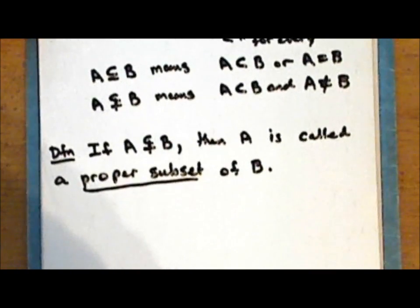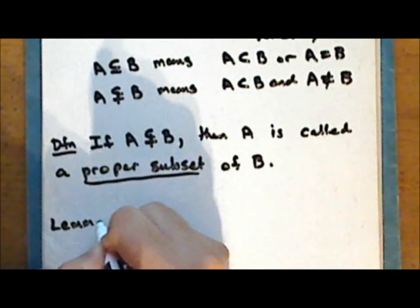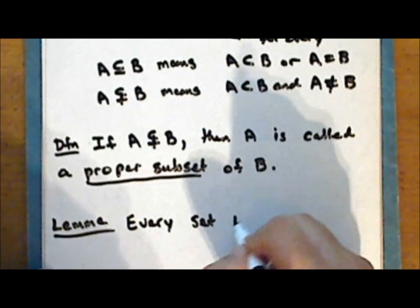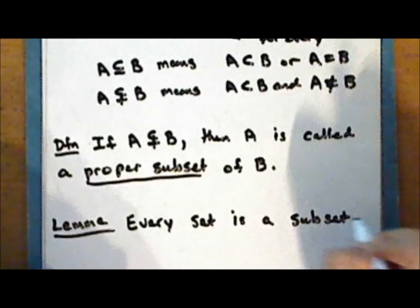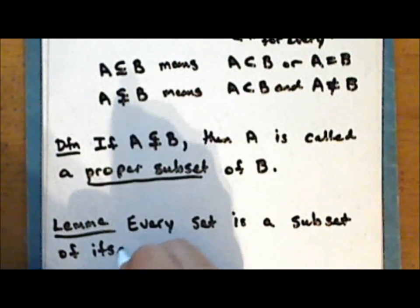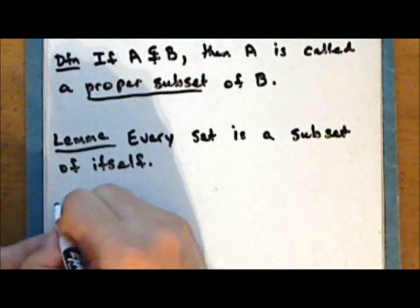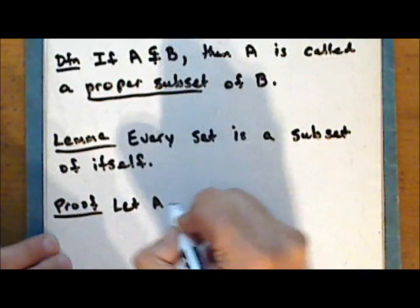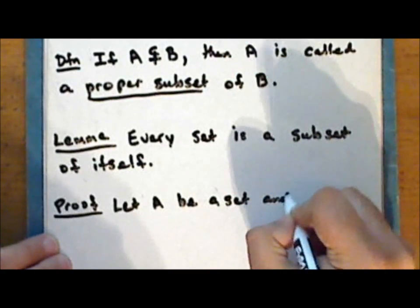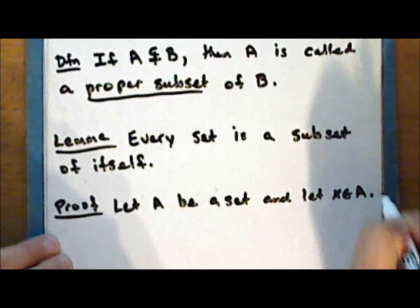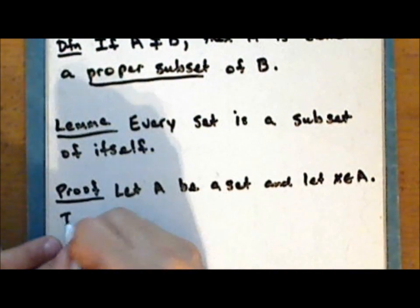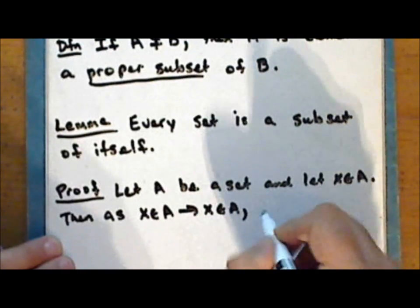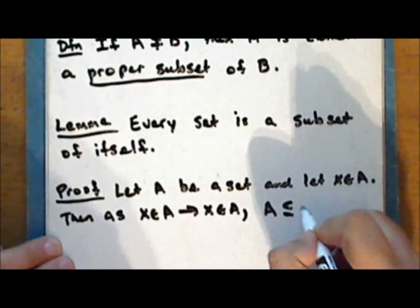So now we come to our first mini-theorem, which we will state as a lemma: every set is a subset of itself. The proof is quite simple — this is just a special case of the definition. Let A be a set and let x be an element in the set A. Then, given an arbitrary element x ∈ A, this implies that x ∈ A. Therefore A ⊆ A, and here we definitely have equality.